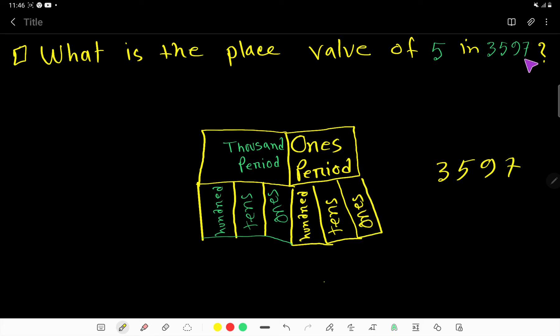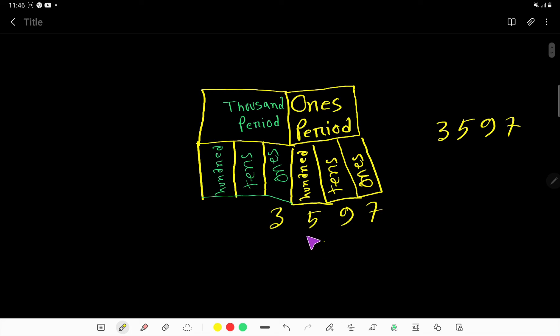One digit will be in the ones column. Seven will come here, then nine will be here, then five, then three. So this number has two periods: ones period and thousands period.